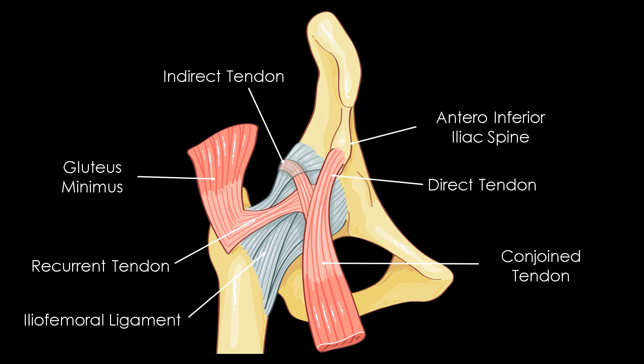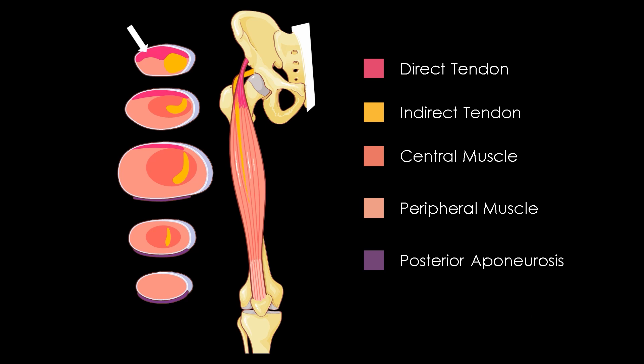The thin and flattened myotendinous junction of the direct tendon thickens the superficial aponeurosis of the proximal third of the muscle, particularly in its anteromedial part. The fibers of the indirect tendon, posterior components of the conjoined tendon, take the shape of a comma and form a conjunctive sagittal band, then continue up to the distal third of the muscle.